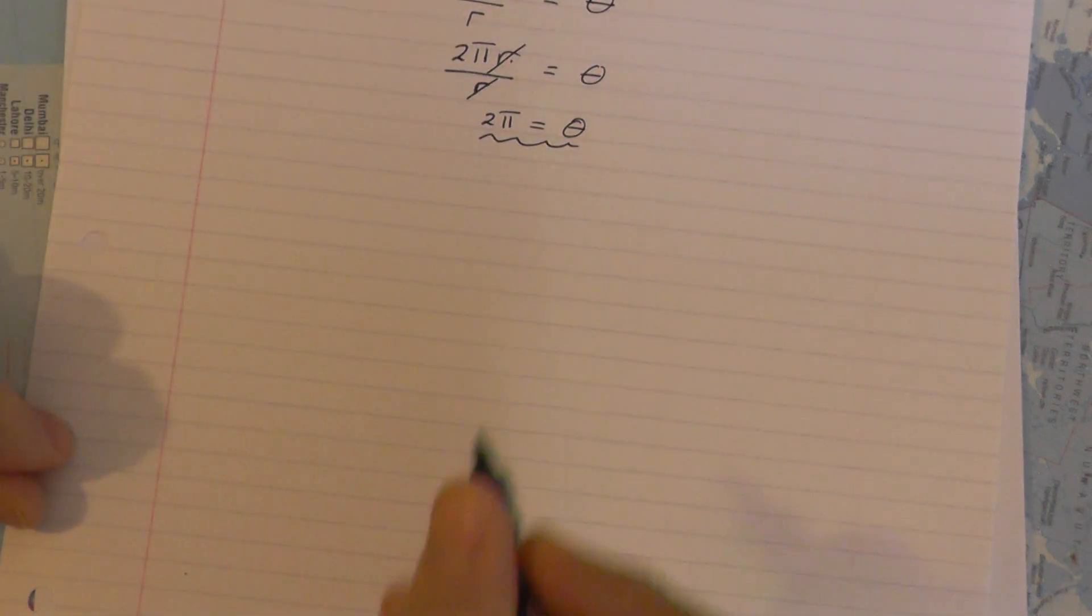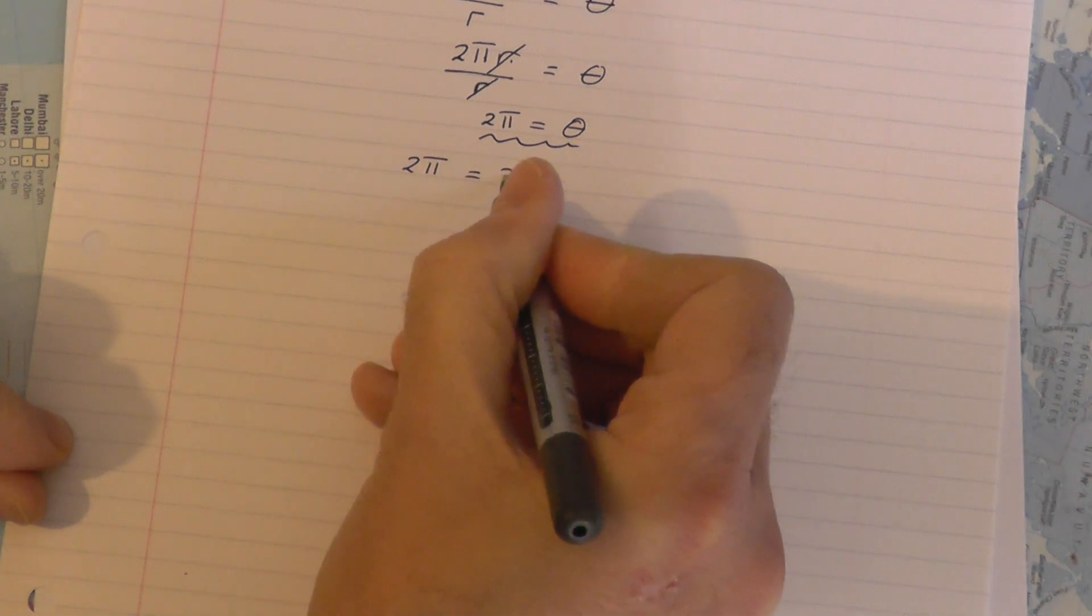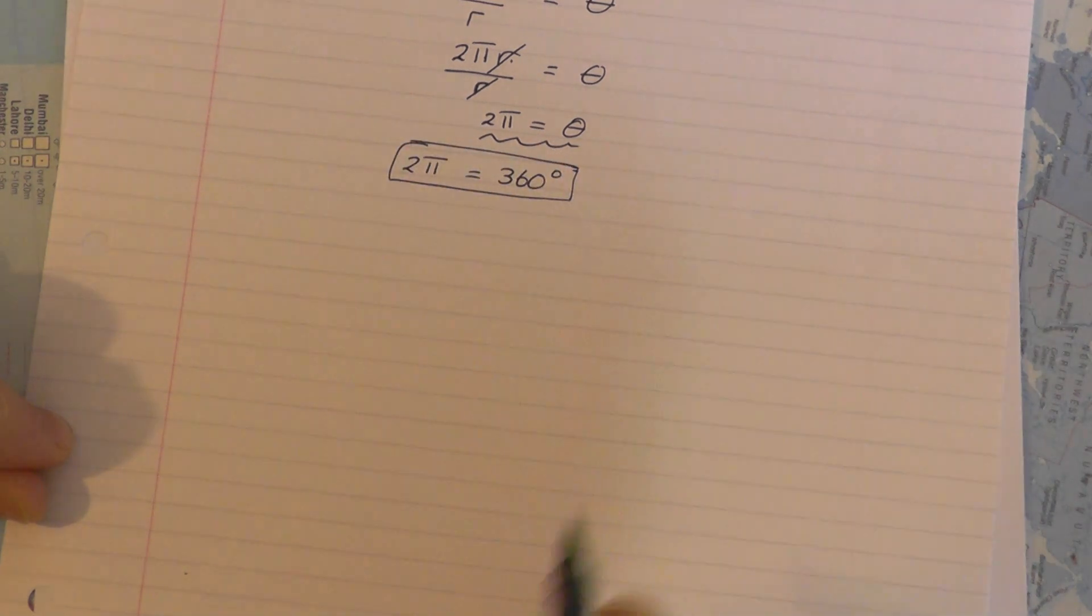So what you need to take from this is very simple. 2π radians is equivalent in degrees which we should know to be 360 degrees.